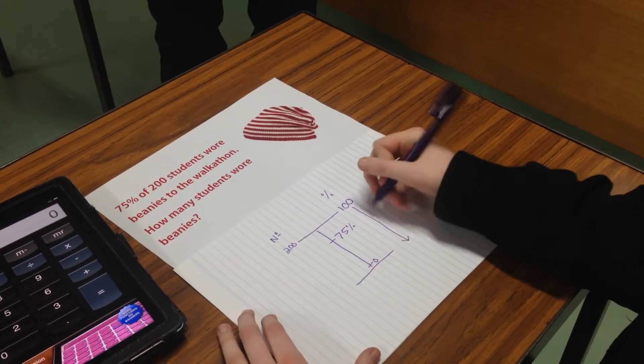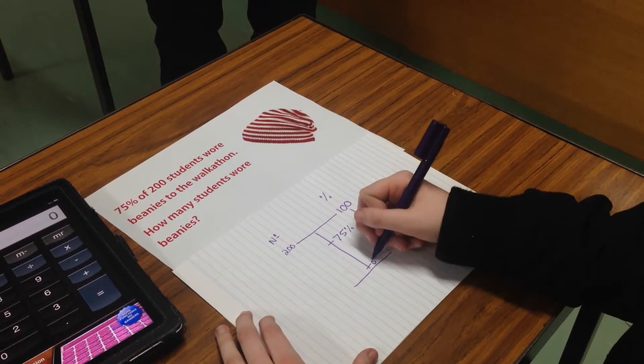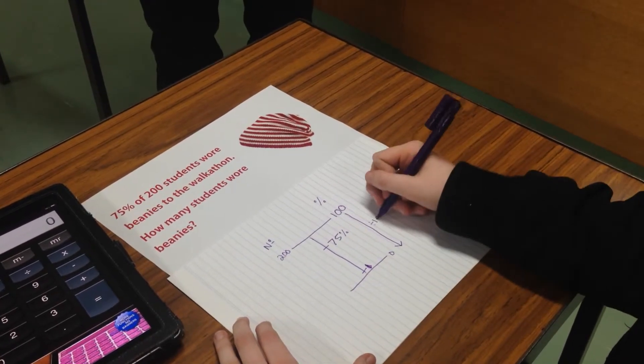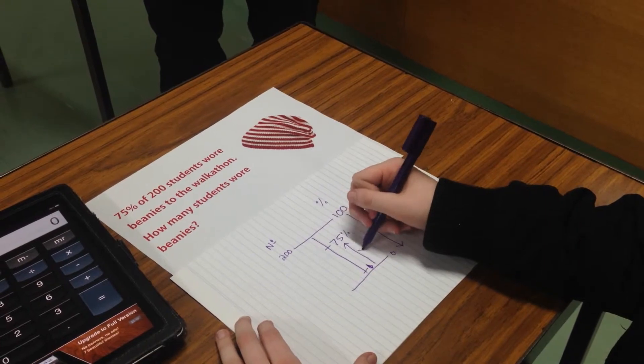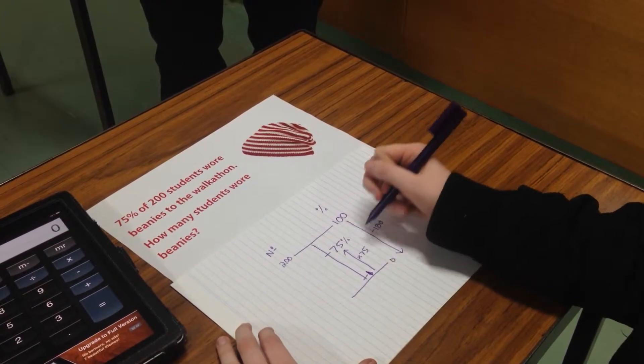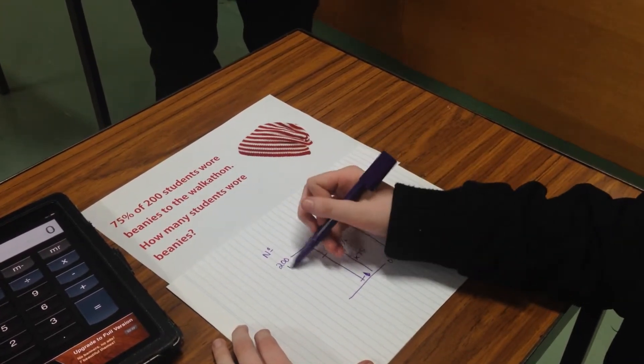you go 100% divided by 100 to get down to 1%, and then 1 times 75 to get to 75%. Then we do that on the other side,